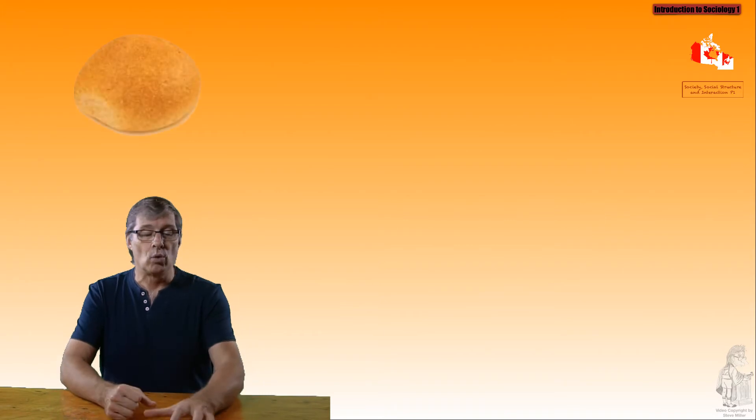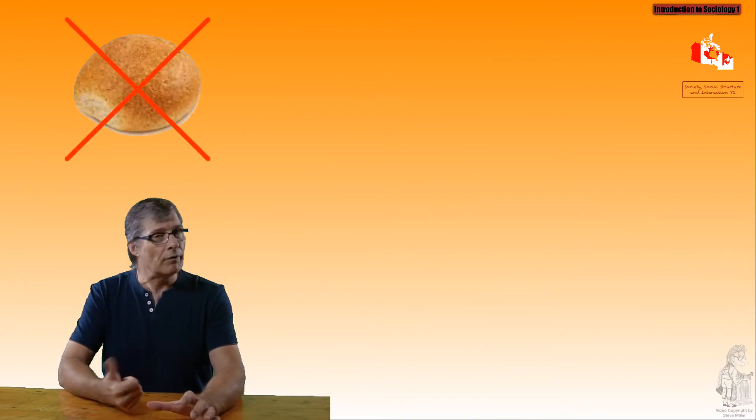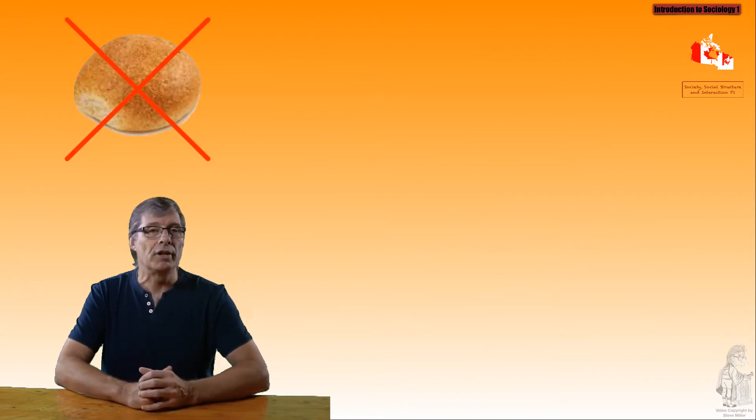The next section we're going to look at some of these terms in regards to the organization of society, touching on roles. A role is a set of behavioral expectations associated with a given status. We occupy a status, we play a role. If I have the status of police officer or nurse, then my role of nurse or police officer is what I do to meet that status that we occupy.